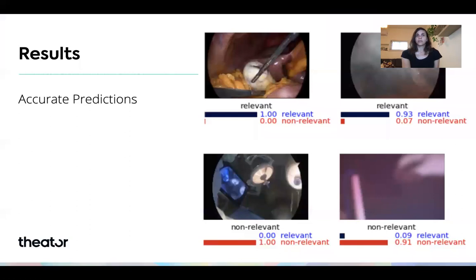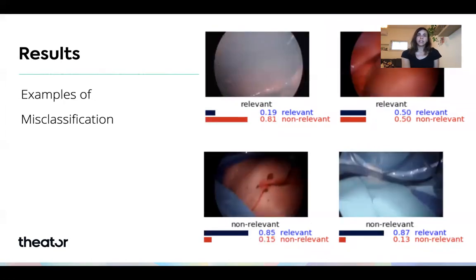Here are some examples of the model's predictions. You can see on the left a very accurate classification, as well as a challenging correct classification of unusual blurring frames. In cases of misclassification, mostly there are quite reasonable mistakes due to unusual colors or very blurred frames, as you can see in the bottom picture, where there are some body segments inside the picture and it appears as an in-body frame.